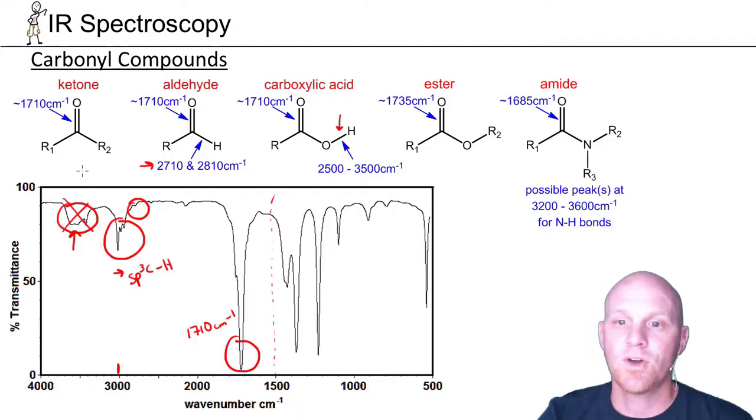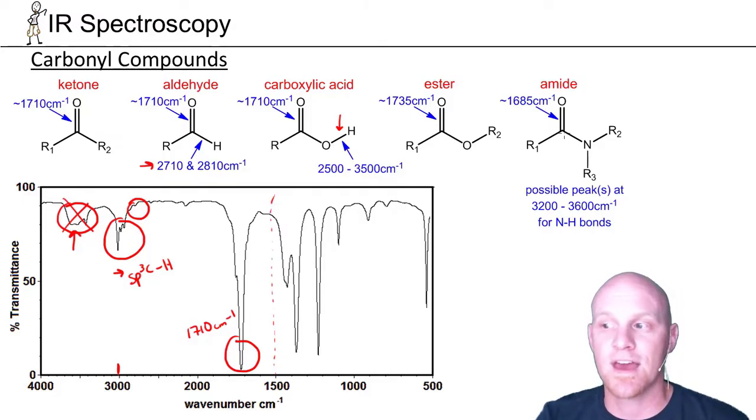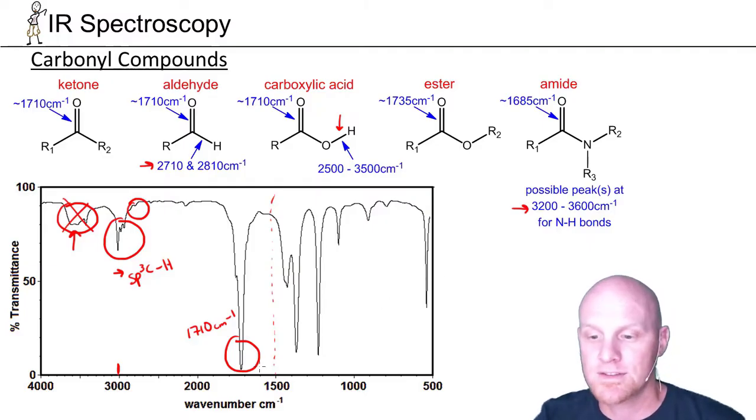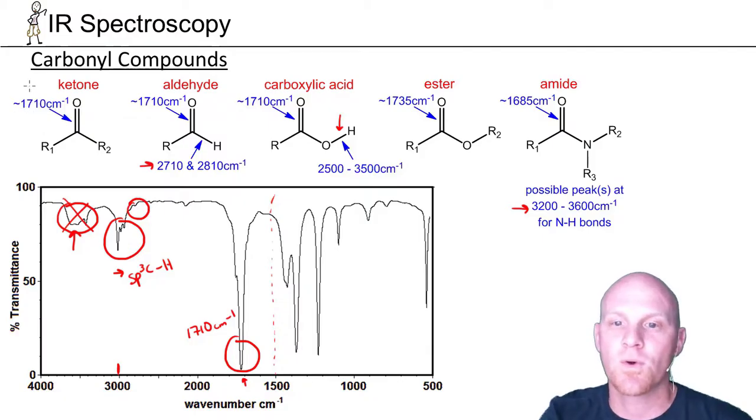If you compare the ketone and the ester, neither one has an additional peak. Same with the amide. But the big difference between the three often is where the carbon-oxygen bond shows up. Is it closer to 1710, closer to 1735 for the ester, or a little below 1700 for the amide? The amide might also have NH peaks between 3200 and 3600. We can see 1700 right there, so our peak is just above 1700. Most likely, this is going to be a ketone.